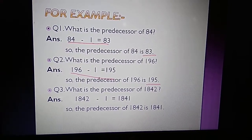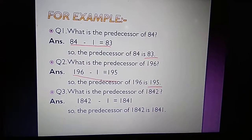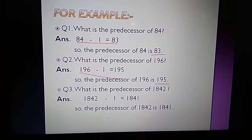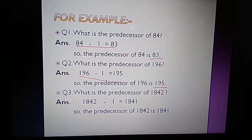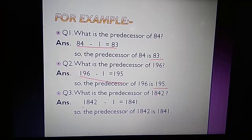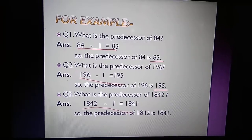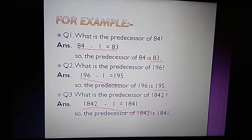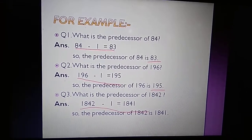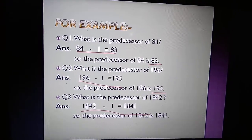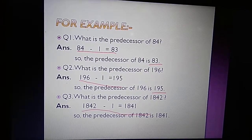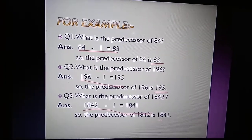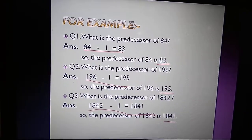Question 3: what is the predecessor of 1842? We subtract 1 from 1842 and get 1841. So the predecessor of 1842 is 1841.